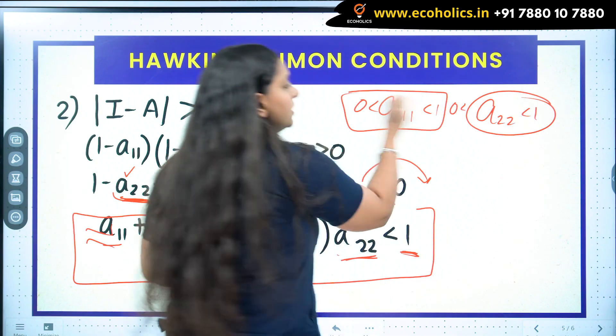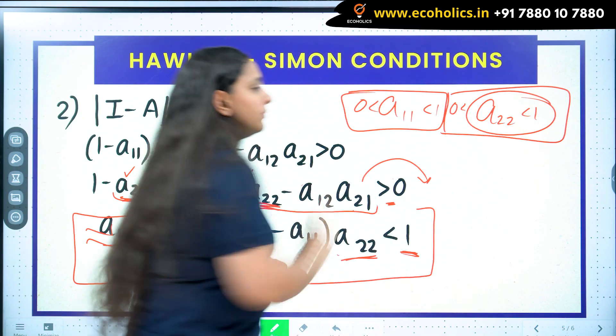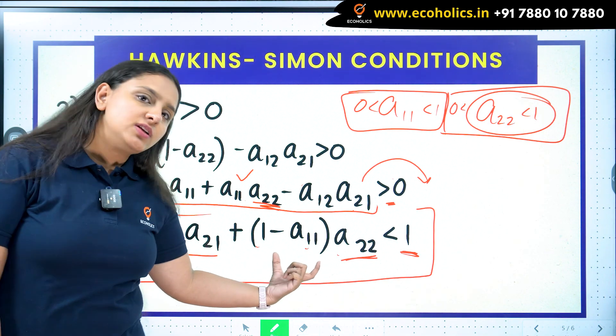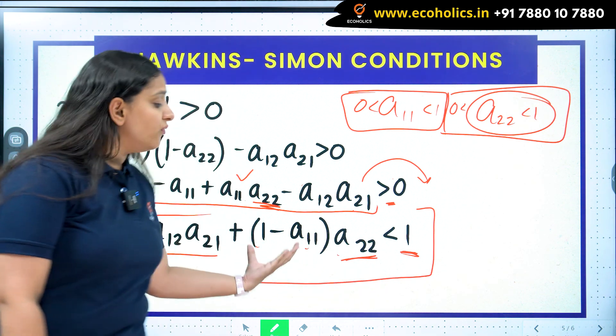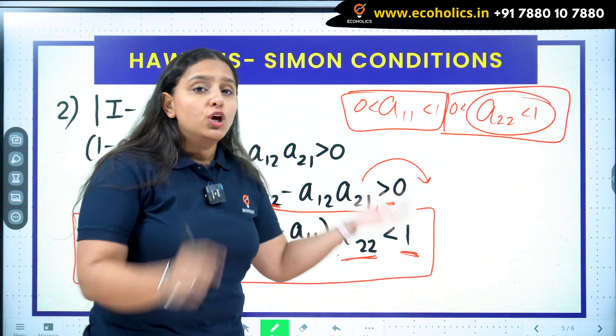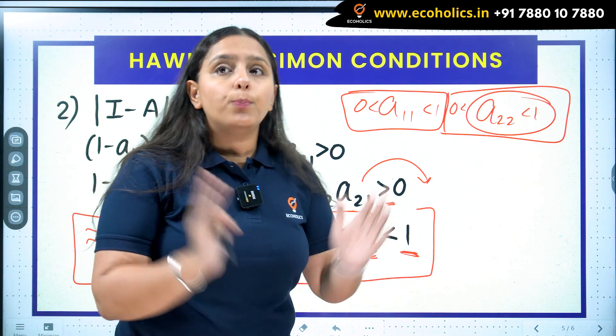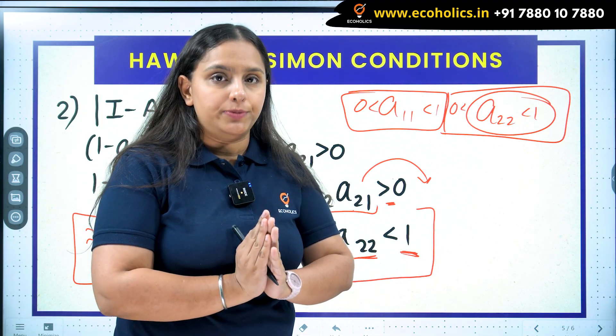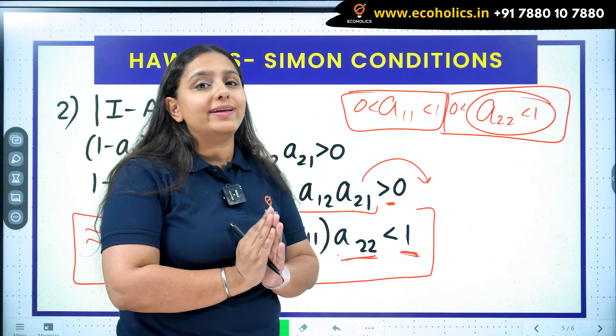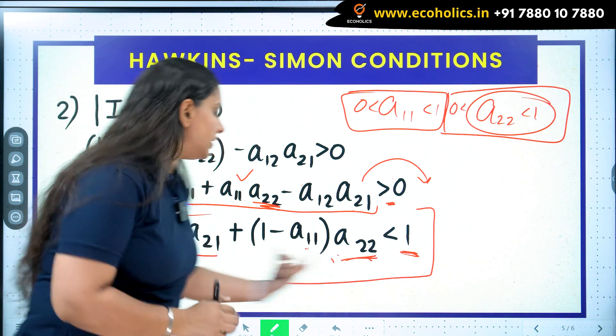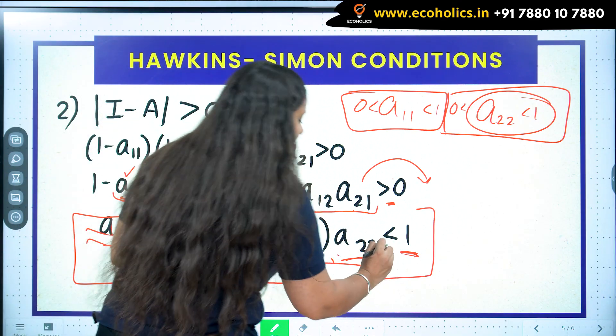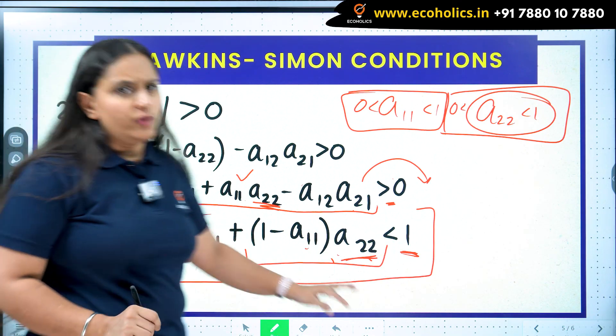So they are numbers which are between 0 to 1, right? (1-a_11) is a number which is between 0 to 1, and a_22 the same way. When I multiply two numbers which are between 0 to 1, the product gets smaller, correct? The product will get smaller. So it means this number is especially going to be very less than 1. Now why are we discussing it?